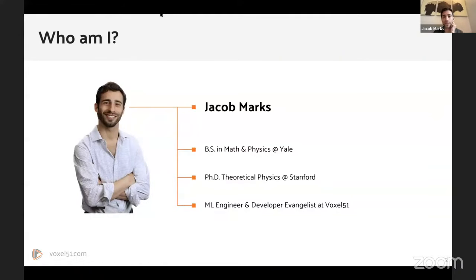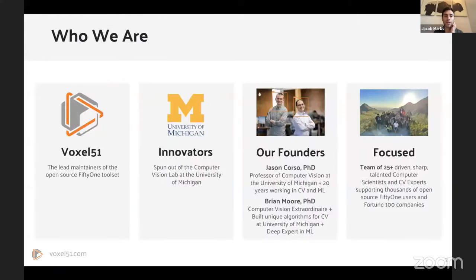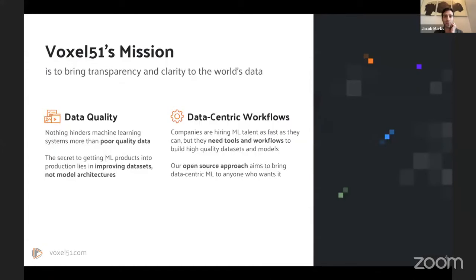I'm Jacob, my background is in physics. I am now a machine learning engineer and developer evangelist at Voxel51. Voxel51 is a data-centric AI company focused on helping to curate and visualize data — so building better datasets so you can train better models. We want to bring transparency and clarity to the world's data, enabling data quality and data-centric workflows.